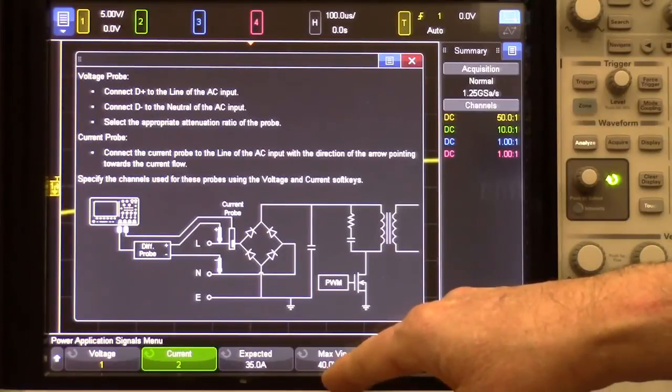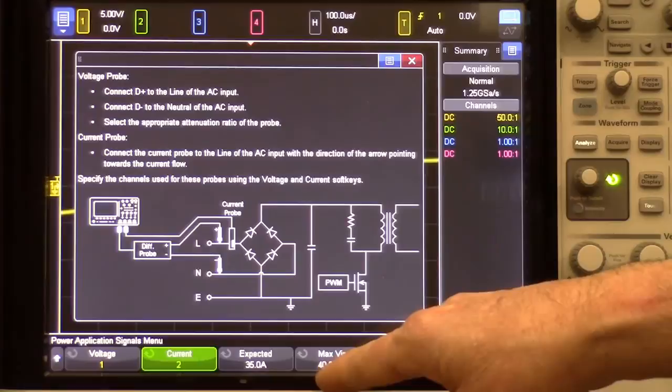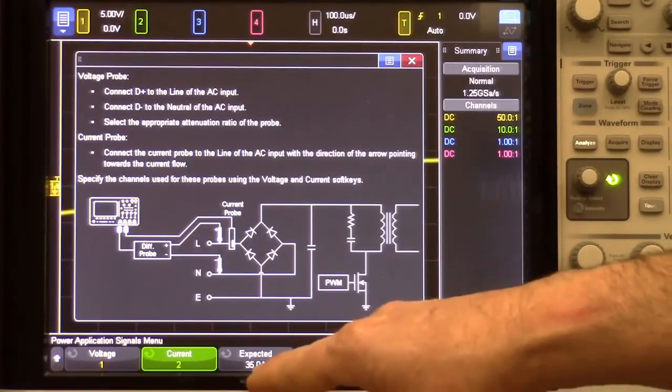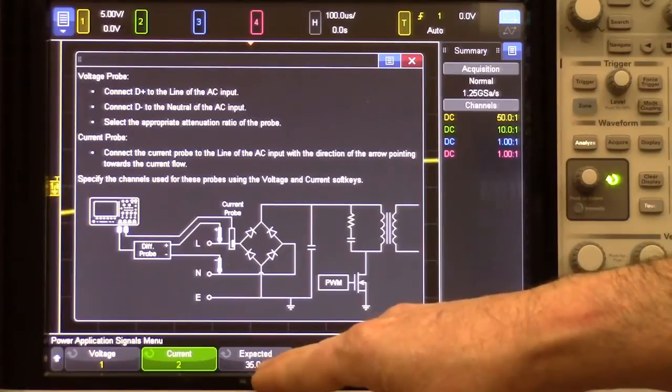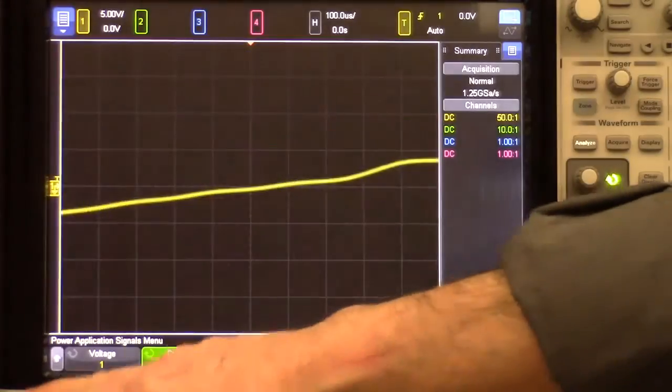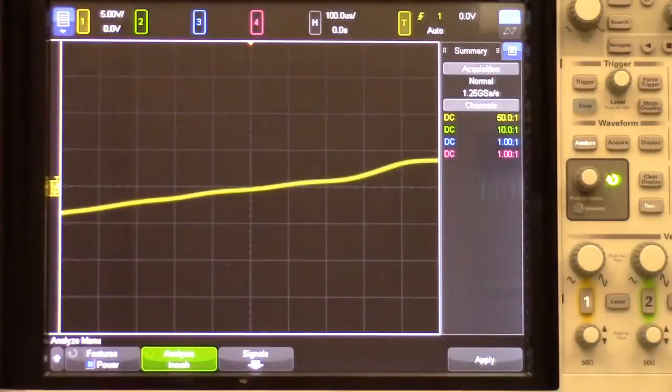Our demo board, the output of the transformer that feeds the demo board, is approximately 40 volts peak-to-peak. This one may be unknown, and you may have to guess it and run this test a couple of times. But at this point, we're all ready to perform an inrush current measurement.